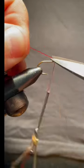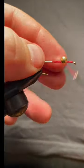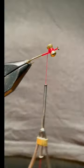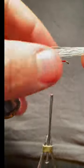The Clouser Minnow is a simple fly to tie that is effective for catching many species of fish in both salt and fresh water.